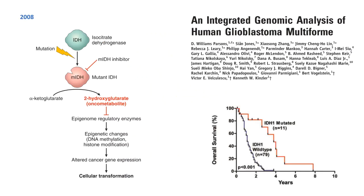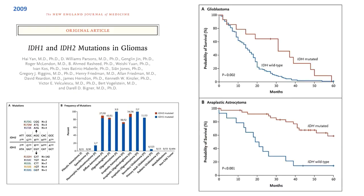Moving forward to 2008, a subset of glioblastomas with IDH mutations were discovered. These tumors were seen in a younger population and had better prognosis than IDH wild-type glioblastomas. In a follow-up paper, they discovered that IDH mutations are the most common type of mutations in low-grade gliomas and IDH mutant gliomas have better prognosis at every grade level. Most surprisingly, grade 4 IDH-mutated glioblastomas had better prognosis than grade 3 IDH wild-type tumors, emphasizing the problem with relying solely on morphological grading.